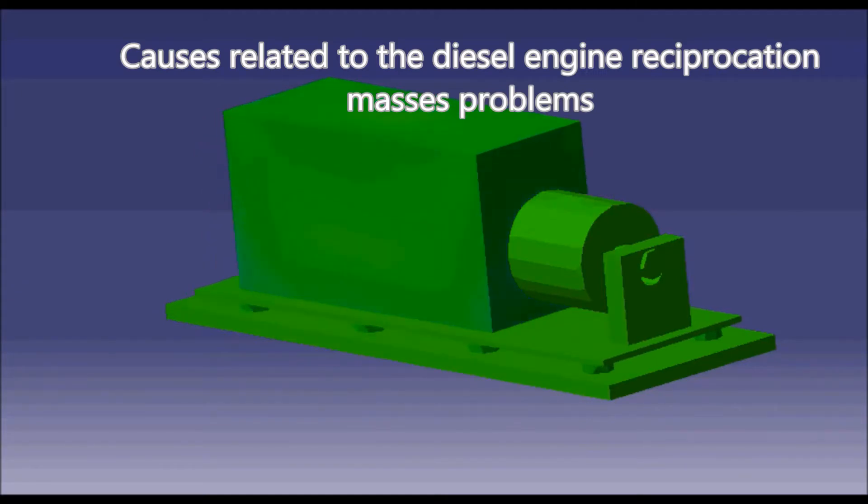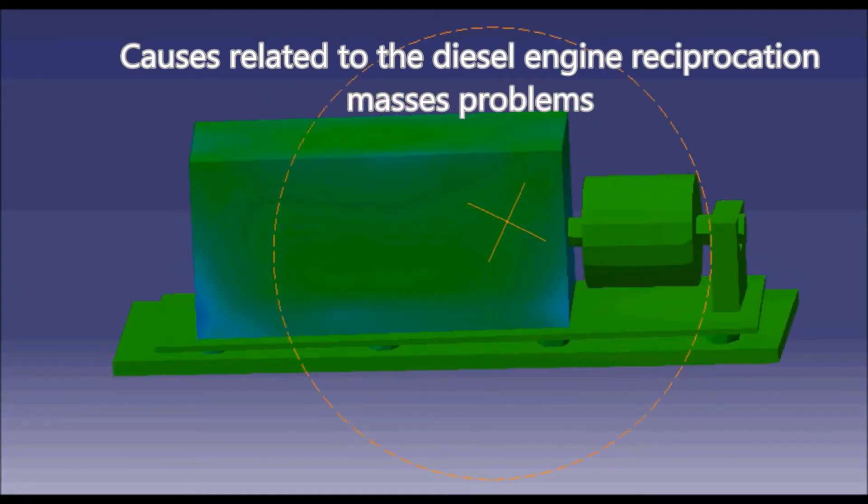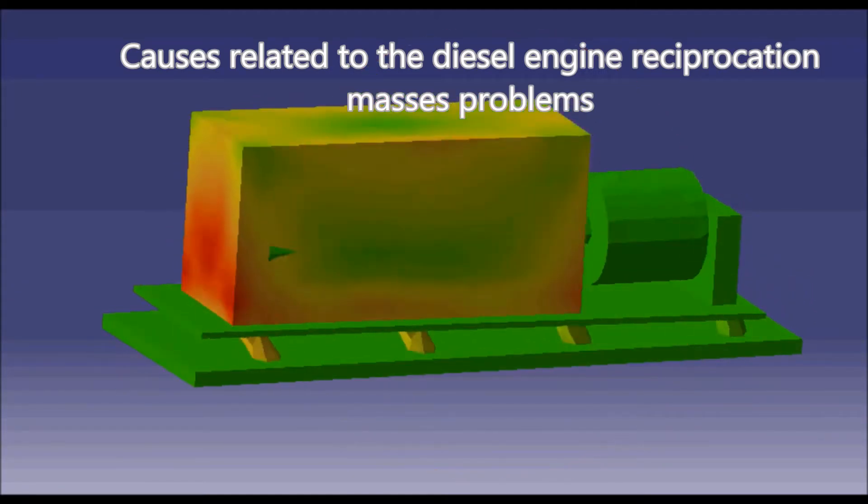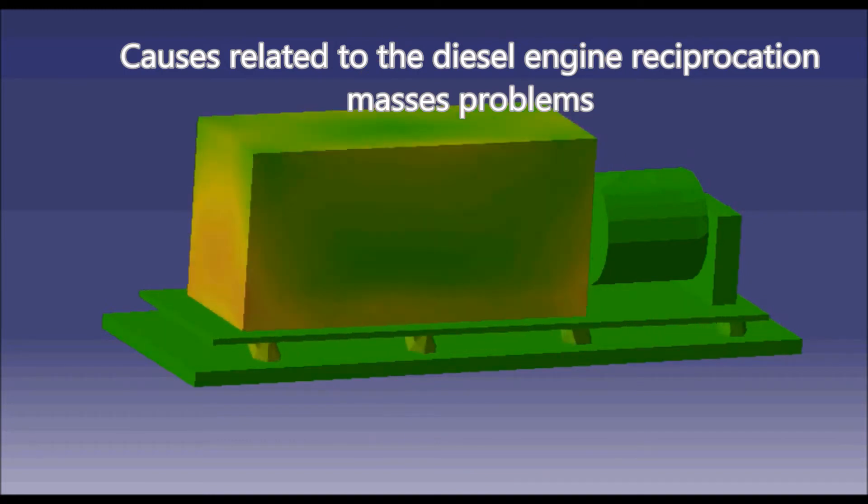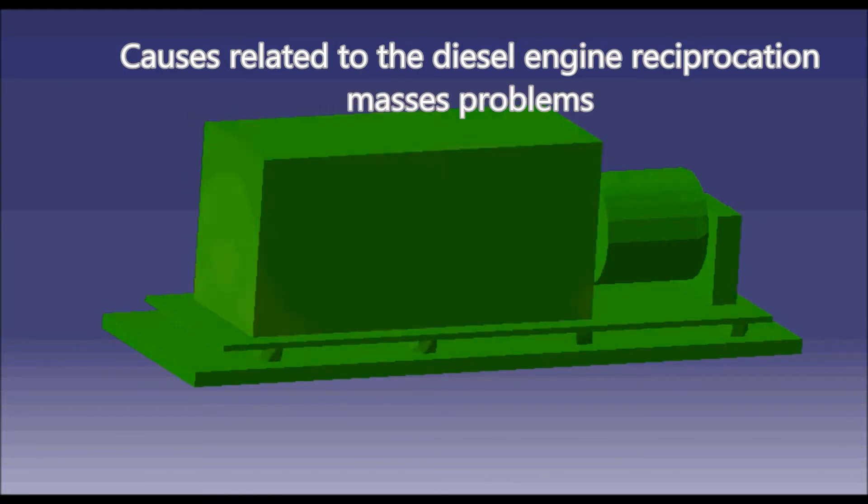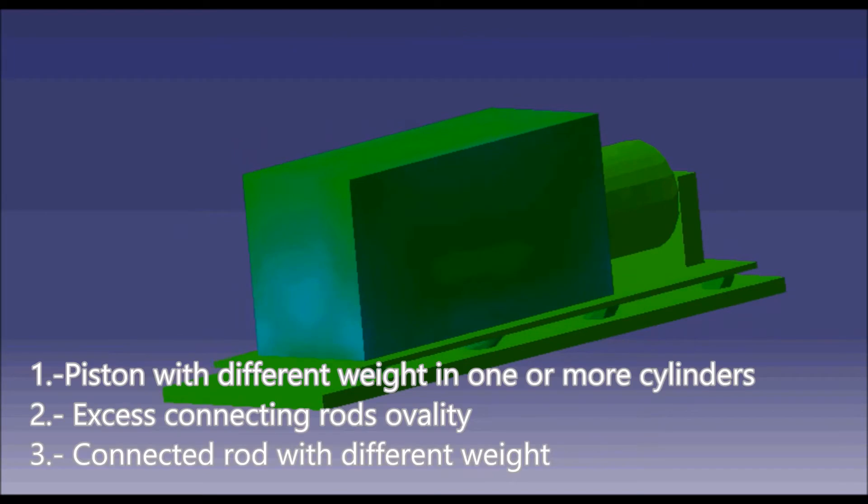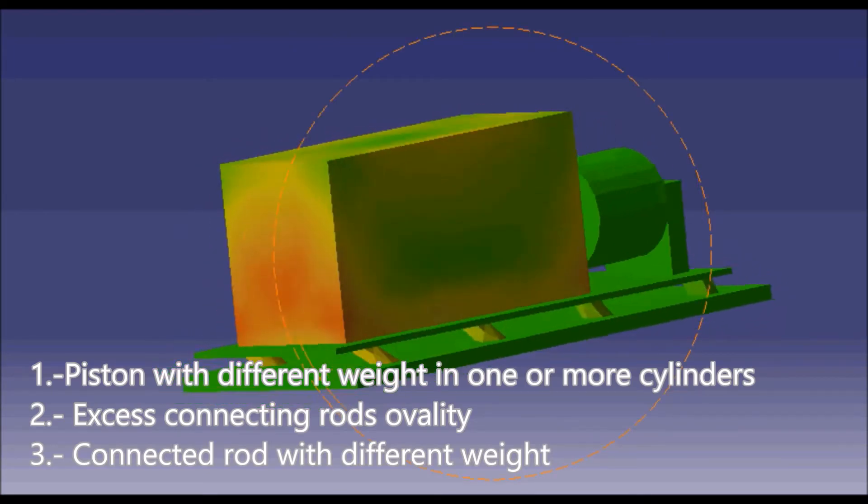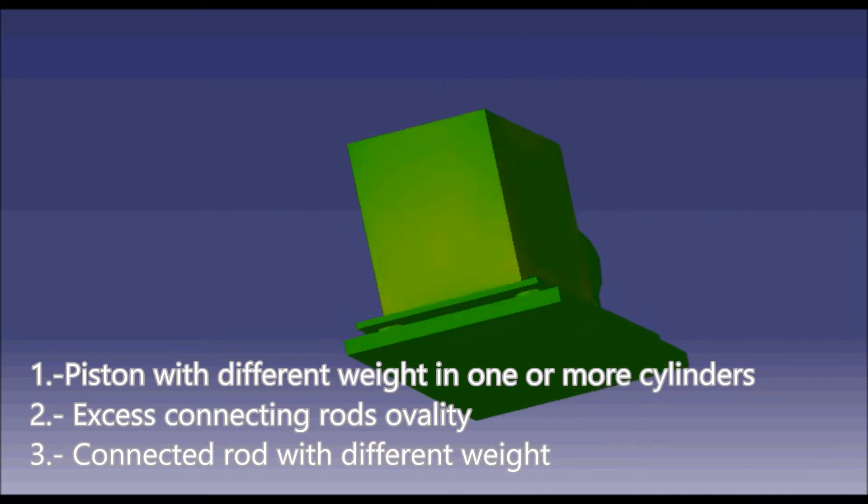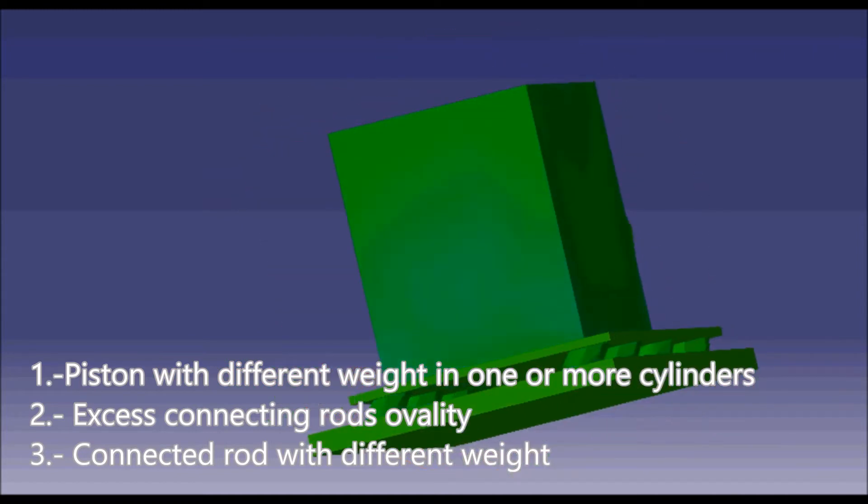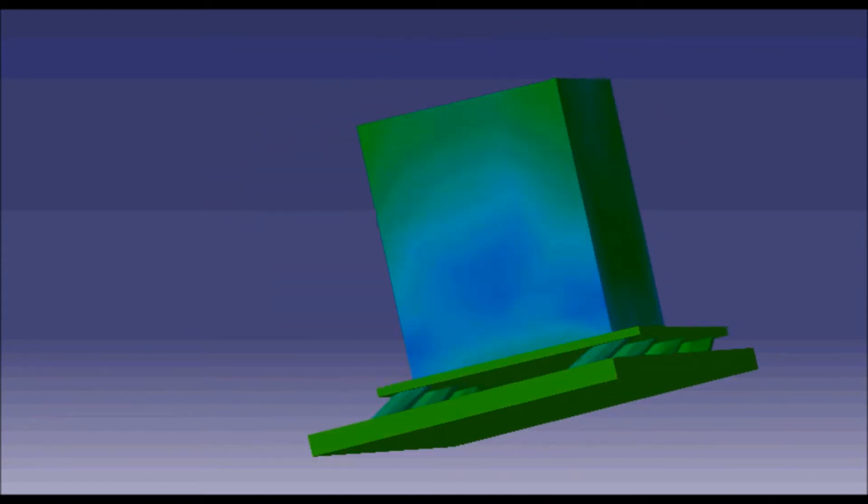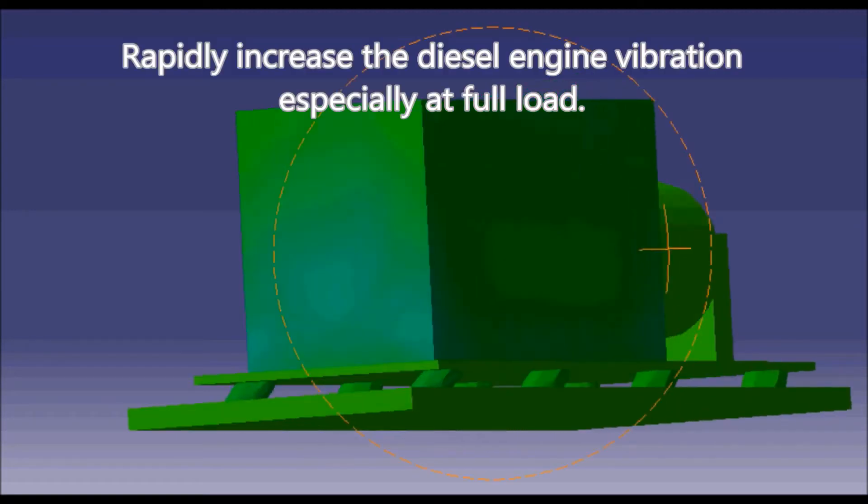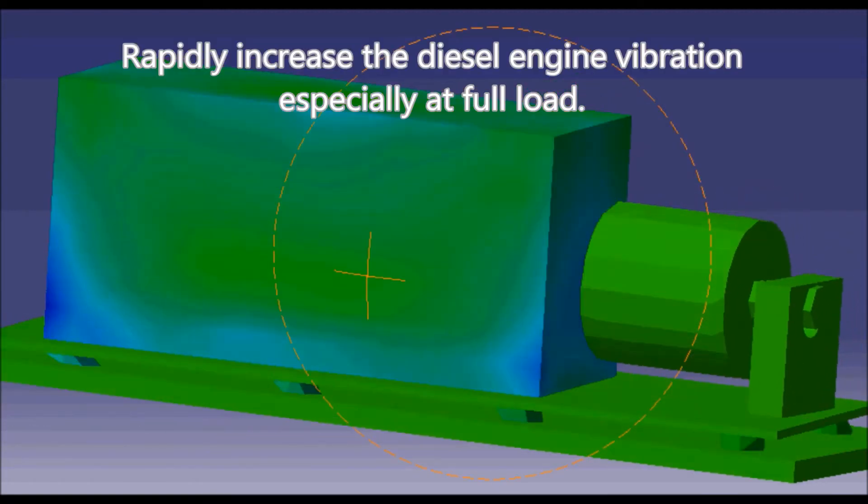Causes related to the diesel engine reciprocation masses problems: 1) piston with different weight in one or more cylinders, 2) excess connecting rod ovality, 3) connecting rod with different weight. These rapidly increase the diesel engine vibration, especially at full load.